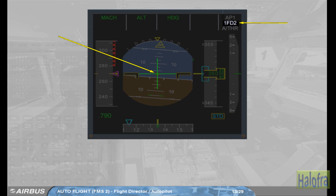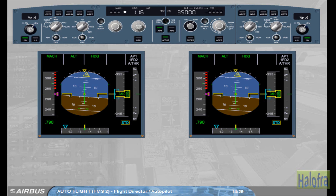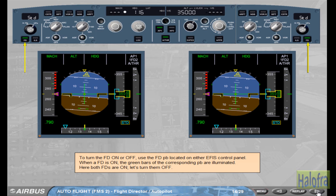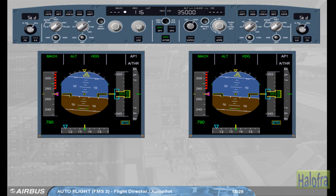The flight director symbols are called crossbars and are referenced to the aircraft attitude symbol. To turn the flight director on or off, use the flight director pushbutton located on either EFIS control panel. When a flight director is on, the green bars of the corresponding pushbutton are illuminated. Here both FDs are on. Let's turn them off. Each pilot presses his flight director pushbutton. Flight director bars are removed from the PFD, engagement status is cleared on the FMA, and the pushbutton green lights are extinguished.